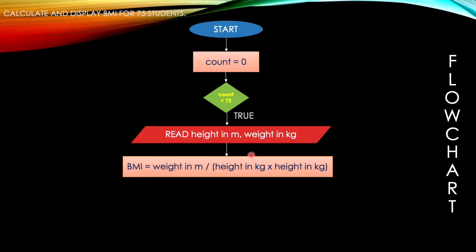After the input we have our process. The shape for process is a rectangle. This is the formula to calculate the BMI: BMI equals weight in kilograms divided by height in meters times height in meters.